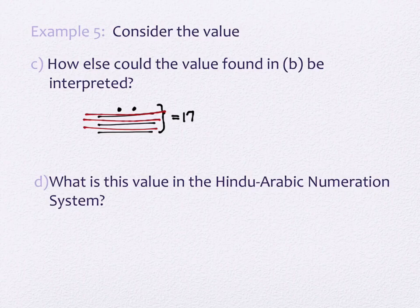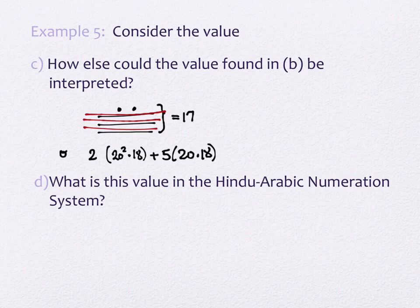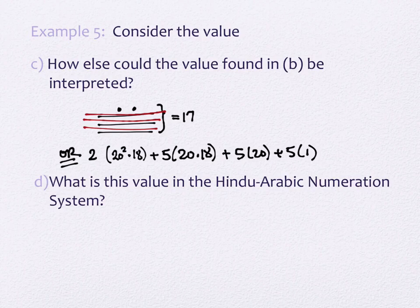If we interpreted it that way, we would have a 2 in one place — and it's 4 places up, so that is actually 20 squared times 18. There's a 5 in the 20-times-18 place. There's a 5 in the 20s place. And there's a 5 in the ones place. We could add all this together and get a very large number. So there's this ambiguity feature that we don't really have a good way to distinguish.